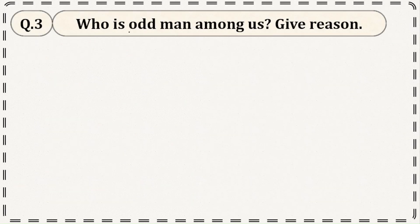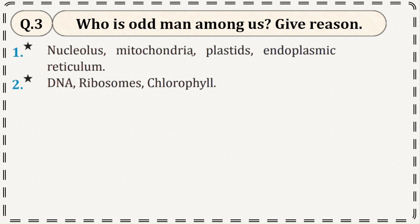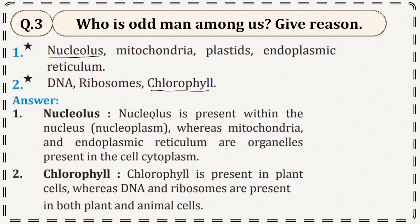Question number 3: Find the odd one out. First set: nucleolus, mitochondria, plastid, endoplasmic reticulum — answer is nucleolus, because nucleolus is present inside the nucleus in the nucleoplasm, whereas mitochondria, plastid, and endoplasmic reticulum are organelles present in the cell cytoplasm. Second set: DNA, ribosomes, chlorophyll — answer is chlorophyll, because DNA and ribosomes are found in both animal and plant cells, but chlorophyll is only present in plant cells.